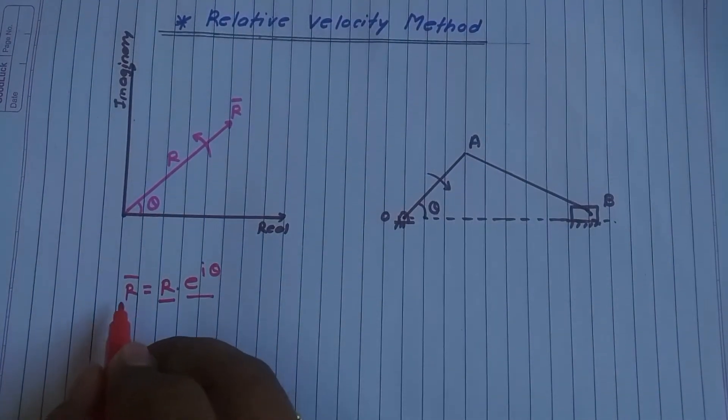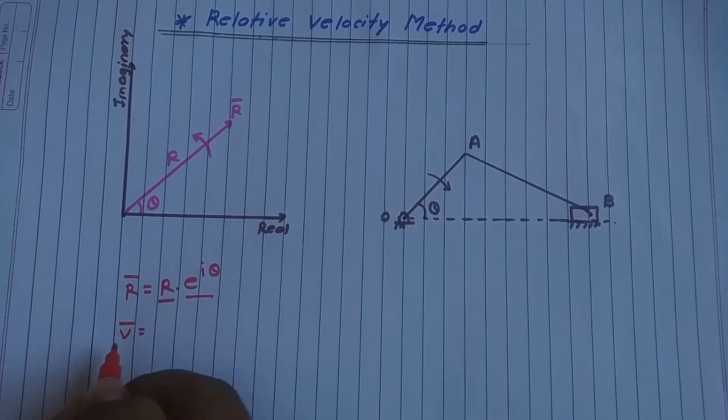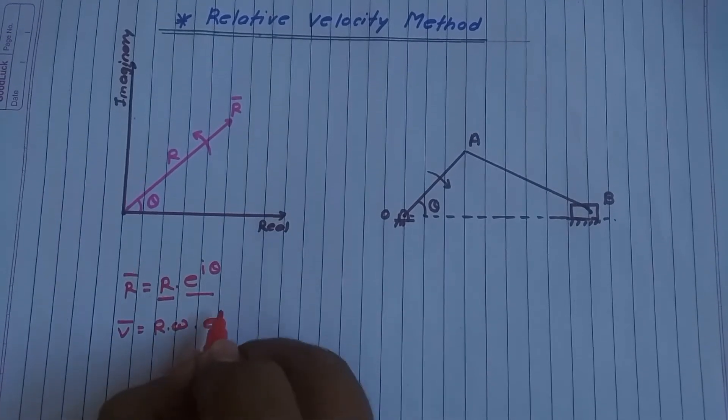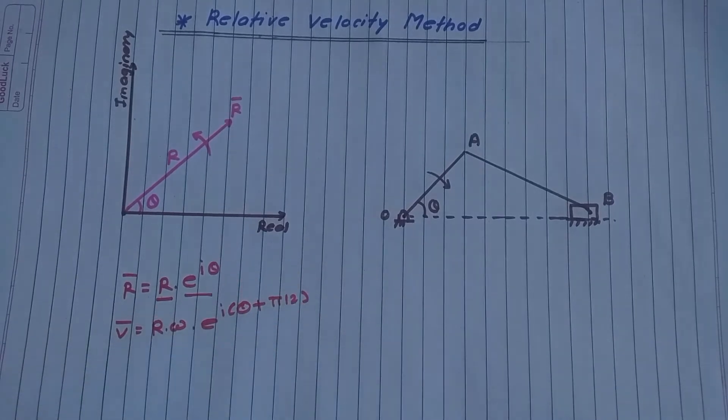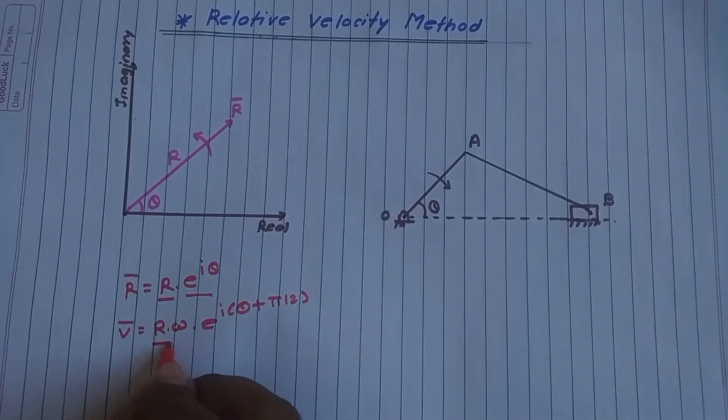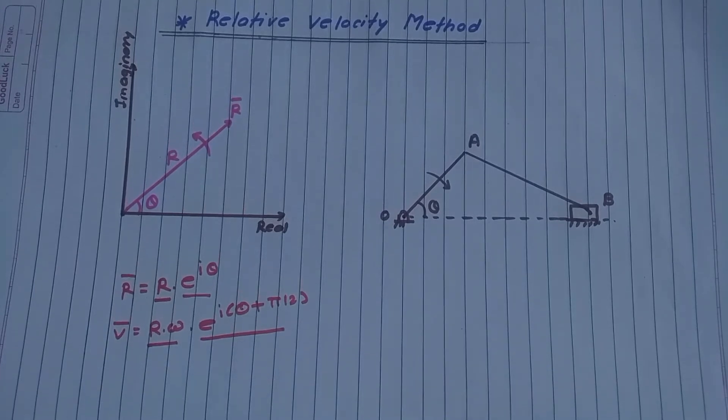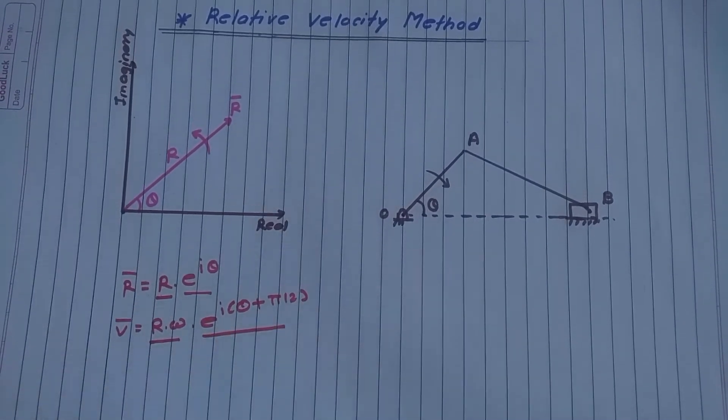If we will derive this equation it is a position. If we will derive we will get velocity and it will be r omega e raised to i theta plus pi by 2, where r omega will be magnitude and this is unit vector or direction means the direction is given as theta plus pi by 2.